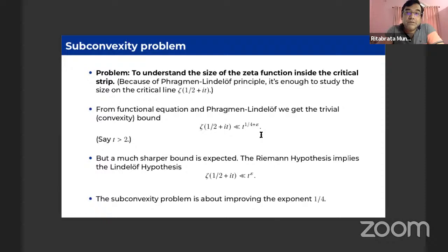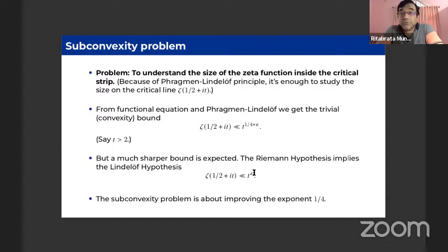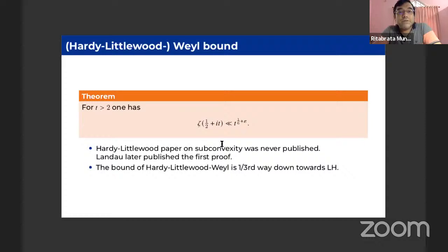To understand the distribution of primes, one needs to understand the distribution of zeros inside the critical strip. Riemann's famous conjecture — the Riemann hypothesis — says all zeros should lie on the central line. Hardy and Littlewood were looking at the size of the zeta function inside the critical strip. Using complex analysis and the functional equation, specifically the Phragmén-Lindelöf convexity principle, one can derive that on the central line the zeta function is bounded by T to the power one-quarter plus epsilon. This is called the convexity bound, and it follows easily from the functional equation alone.